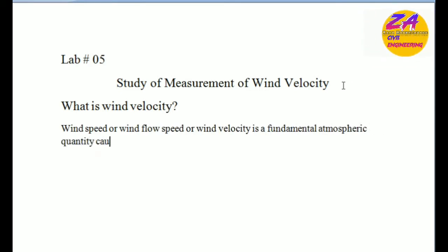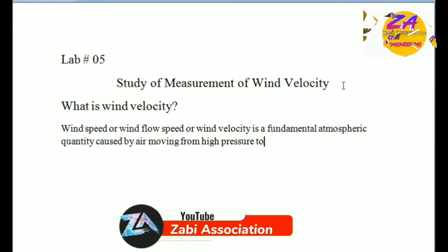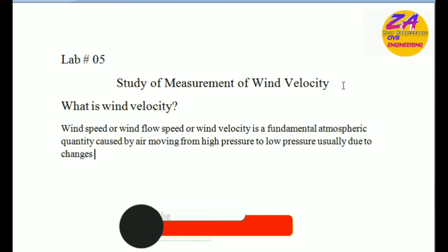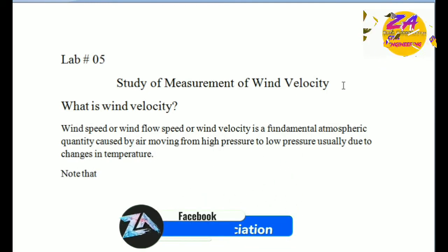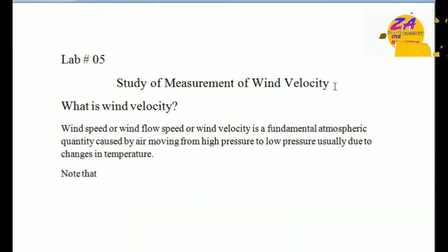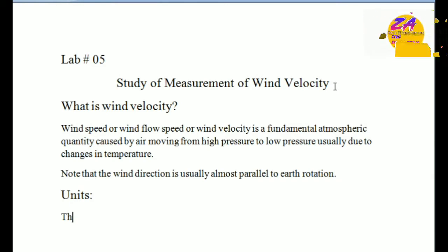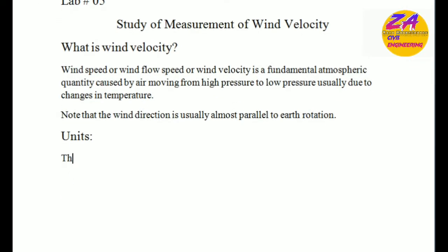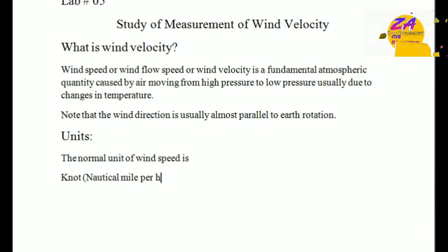What is wind velocity? Wind speed, or wind flow speed, or wind velocity, is a fundamental atmospheric quantity caused by air moving from high pressure to low pressure, usually due to change in temperatures. The wind direction is usually almost parallel to the Earth's rotation. The normal unit of wind velocity is knots.